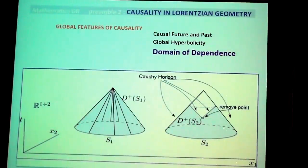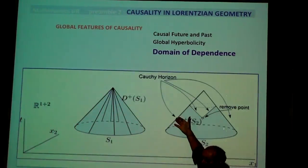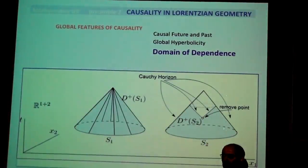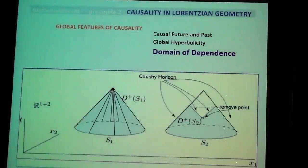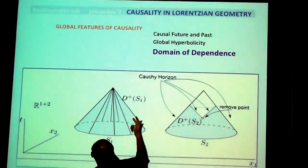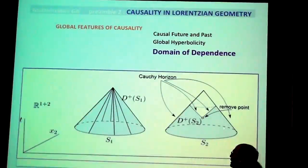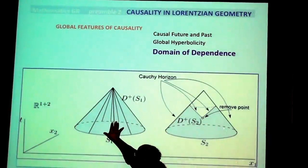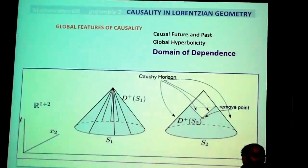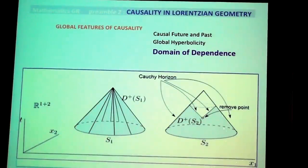Cauchy horizons are not spacelike boundaries; nothing really bad happens geometrically there — the boundary curvature is zero. Cauchy horizons are important in general relativity, and here you see the simplest example. The reason is that you are looking at the domain of dependence of an incomplete manifold. If you have a complete manifold, you would expect this kind of Cauchy horizon not to exist, but there is another story we will discuss later.